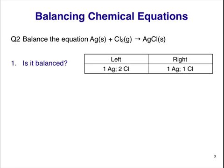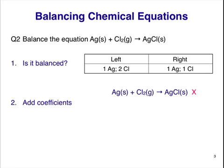Clearly, this is not balanced, and we need to focus our initial attention on the Cl atoms. To balance the equation, we'll add coefficients. These are numbers that go before the chemical formulas, and whose effect is to multiply everything in the formula by that number. We can add coefficients to any reactant, or product, or both. We know it's unbalanced. We can see two Cl atoms on the left but only one on the right. The simplest solution is to add a coefficient of 2 before the AgCl.